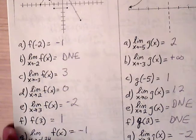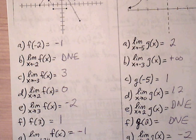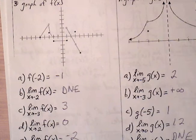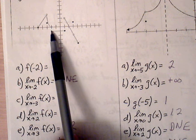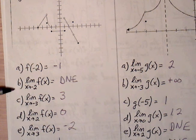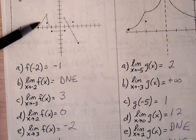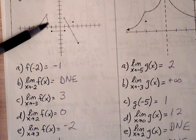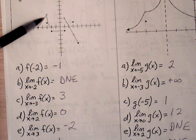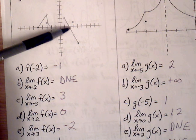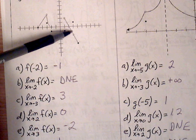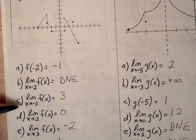Looking at graph number 3: f(-2) is simply the ordered pair, which is at negative 1. For the limit as x approaches negative 2, following the graph from both sides, both branches lead towards the same y-value of positive 3. For the limit as x approaches 2, the graph crosses through that ordered pair with a connection through that point, so the limit as x approaches 2 is equal to 0.